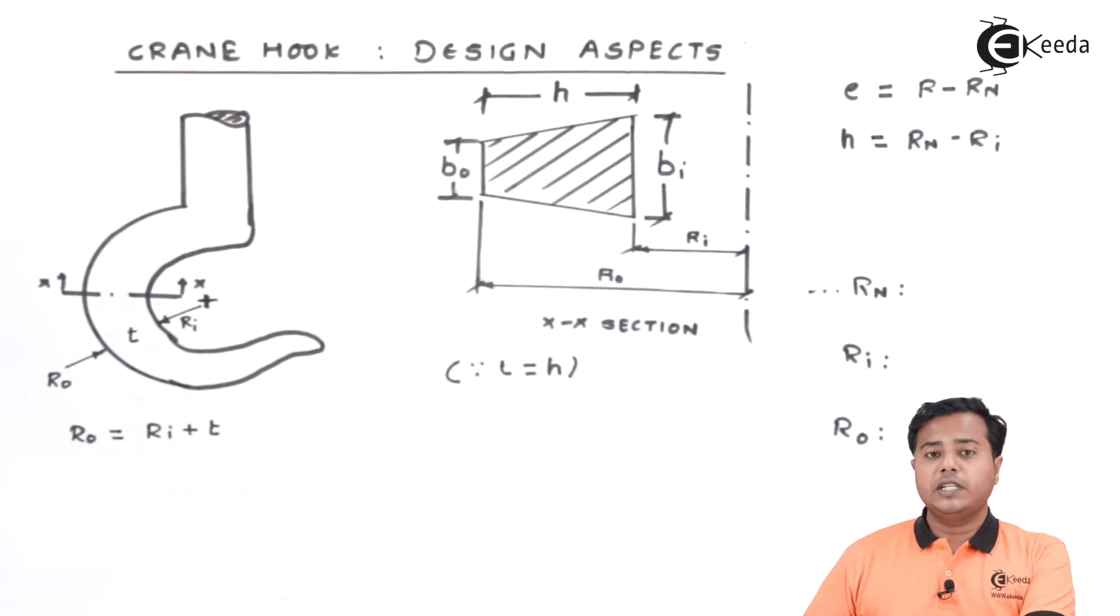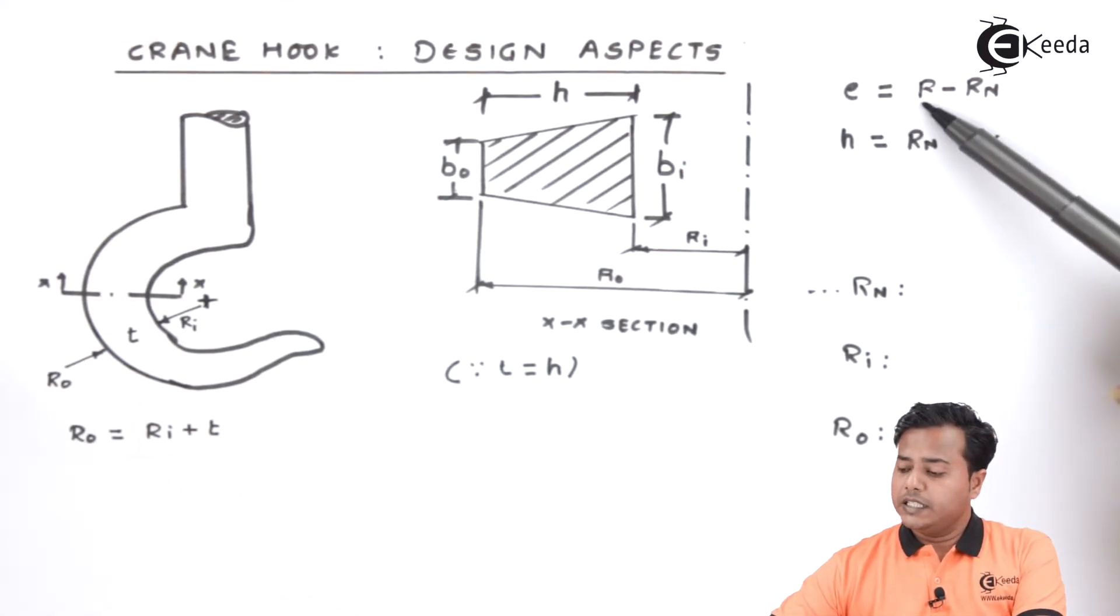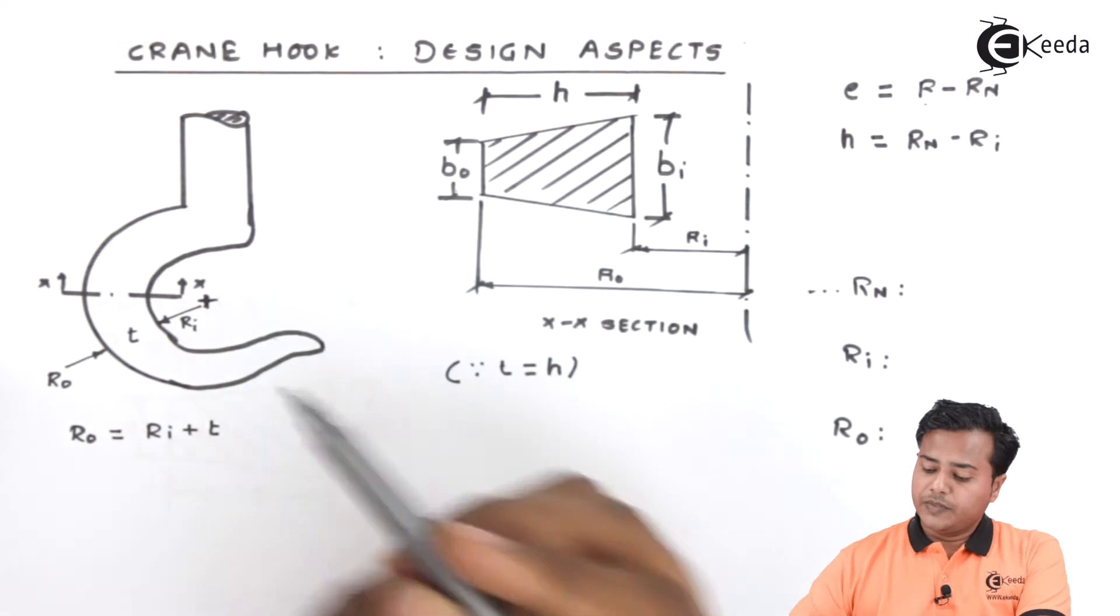With respect to this there are certain formulae. And to use those formulae we need to go through the PHG data book. Such a formula is mentioned here. This is the centricity that lies between the radius and the normal axis radius or the neutral axis radius.